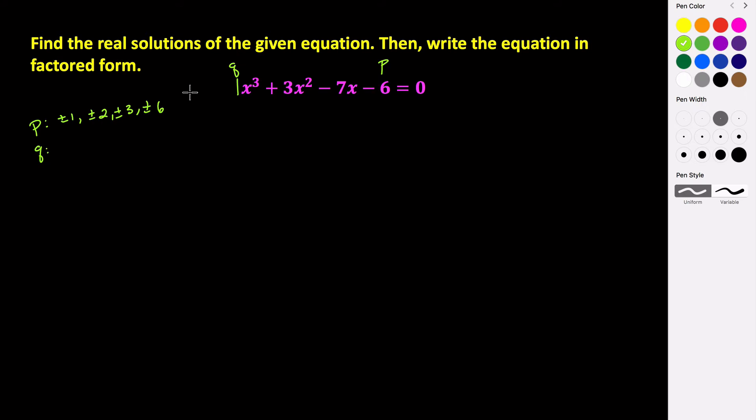And then Q, the factors of 1 are just plus or minus 1. So because we're dividing all of these by 1, when we take a look at P over Q, since we're just taking all of these and dividing by 1, we know that anything divided by 1 is just itself. So really it's just all of our factors of P. So these are our potential rational zeros.